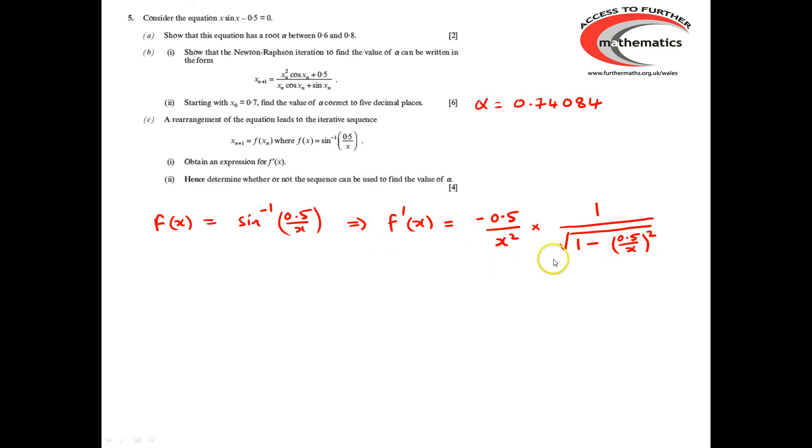If we want to know whether the iteration will converge or not, we need to consider the value of f'(α). We know that alpha is 0.74084 and if we evaluate f'(α), we obtain -1.23. The absolute value of this is bigger than 1, so the iteration will not converge to alpha.